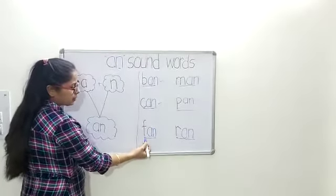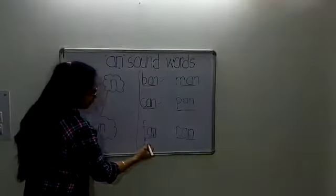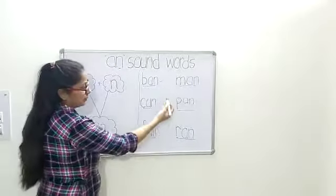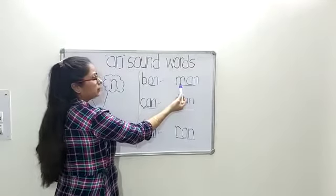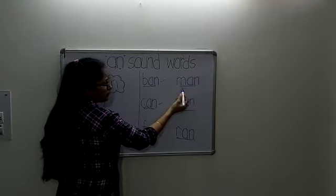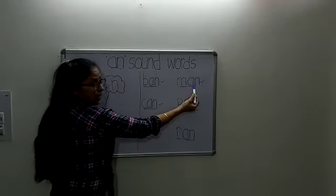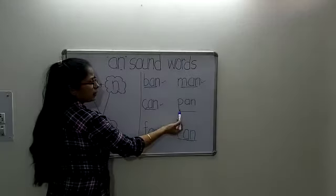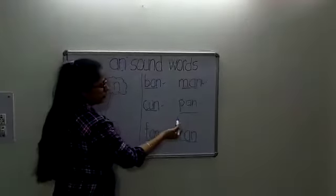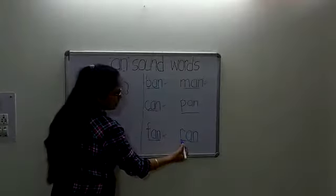The next letter is F and the phonetic sound of F is FA — it becomes FA and FAN. The next letter is M and the phonetic sound of M is MA — it becomes MA and MAN. Then PA and PAN. The phonetic sound of P is PA — PA and PAN.